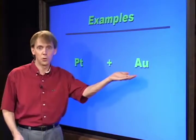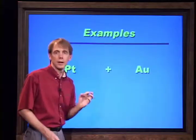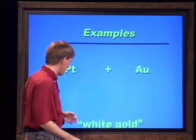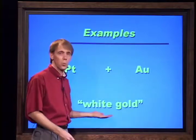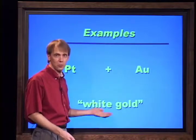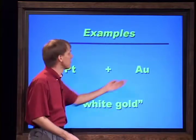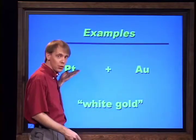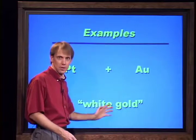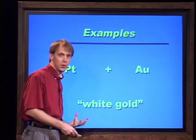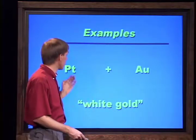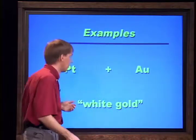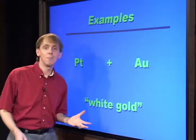Take platinum and gold — combine them and you end up with what we know as white gold, which you'll find used in jewelry. Gold is yellow and platinum is whitish; combine the two together and you end up with a material that is a mixture displaying the properties of both platinum and gold.